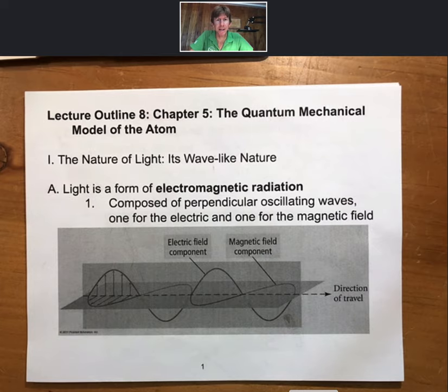Welcome to Lecture Outline 8, Chapter 5, where we talk a lot about light and a little about quantum mechanics and end up with where the electrons are in atoms. We're going to start with the nature of light, and in particular its wave-like nature. And this may be somewhat familiar to you.